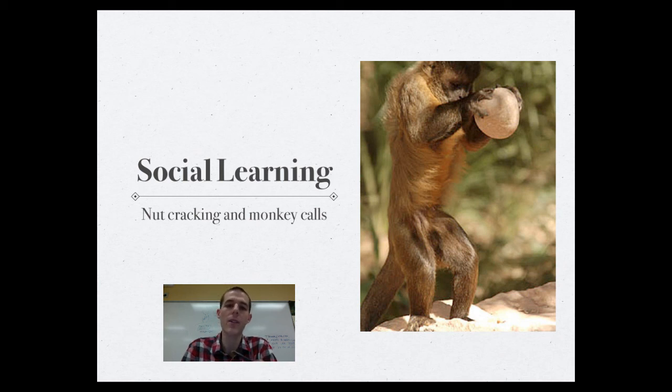And then also, there are types of monkeys that have different types of alarm calls. In the book, it talks about vervet monkeys. And based on the type of predator, whether it be a snake, a jaguar, or an eagle, the monkeys give a different alarm call. And there's also a different response for each call.